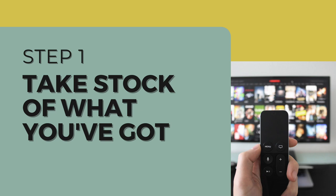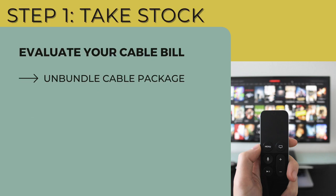We're going to first focus on bills and budgeting. Look beyond the total cost for the cable bill and see how it breaks down. You can consider something like unbundling a cable package if you have bundled services like cable, internet, and landline phone. So what would your cost be if you unbundle your cable from your internet, or if you drop cable and phone altogether? You should also consider if you're using all of the TVs that have cable boxes in your household.